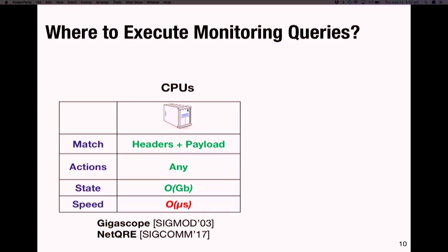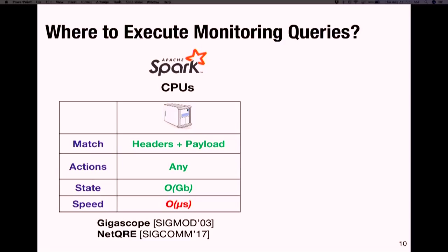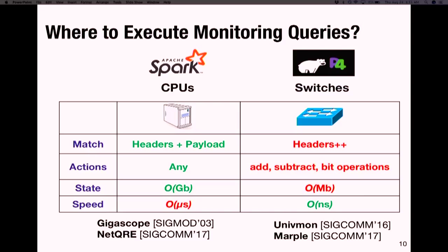CPUs are great because you can extract or parse headers as well as payload fields, apply any action you want, and the stateful memory available is on the order of gigabytes. The problem is that they process packets at the order of microseconds, which is much slower. One can argue that you can use state-of-the-art scalable stream processors to scale the computation, but they still cannot process packets at line rate, and you still need to capture packets from the data plane and send them to the CPU for further processing.